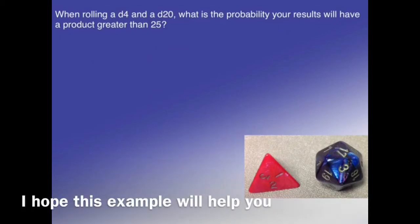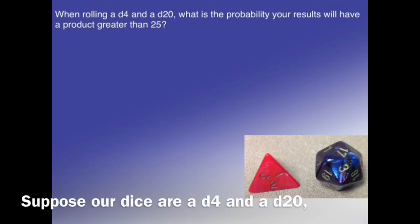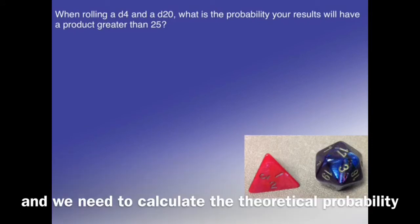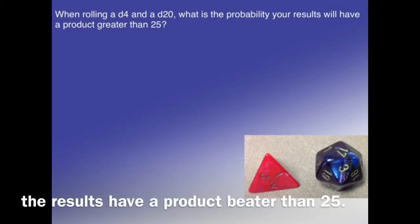I hope this example will help you with the theoretical probabilities on your dice lab. Suppose our dice are a d4 and a d20, and we need to calculate the theoretical probability the results have a product greater than 25.